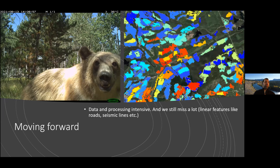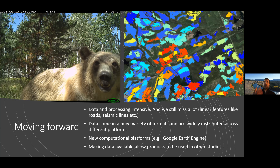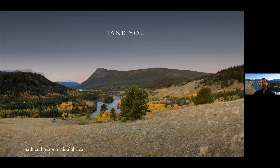To wrap up: we've gotten to a point where we have a lot of data available — it's incredible — but things are still very data and processing intensive, and we still miss a lot of features. Things like roads and seismic lines are really hard to map using satellite data. Data still come in a huge variety of formats and are widely distributed across different platforms, so it can take a lot of work to pull it all together. But we have new computational platforms like Google Earth Engine and others that allow us to manage these huge datasets. And as we make data available — looking at watersheds and disturbances — it translates into all kinds of other work, such as studying grizzly bear habitat and how it's changing.